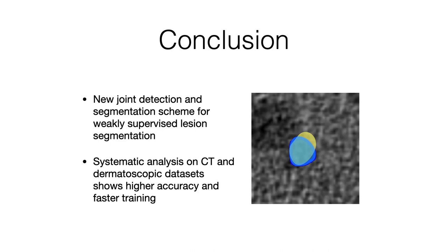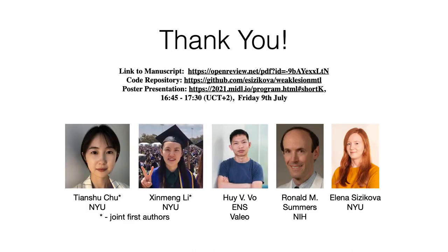To summarize our contributions in this paper, we propose a new joint detection and segmentation scheme in an end-to-end fashion for weak supervision. We demonstrate how to modify existing segmentation architectures to incorporate this new algorithm. We conduct a systematic analysis of the utility of the proposed methodology and show that it quantitatively and qualitatively outperforms prior baselines on three datasets. Our code is available at our webpage. Please let us know if you have any questions — our poster session will start after 4:45 on Friday. Thank you very much for watching.